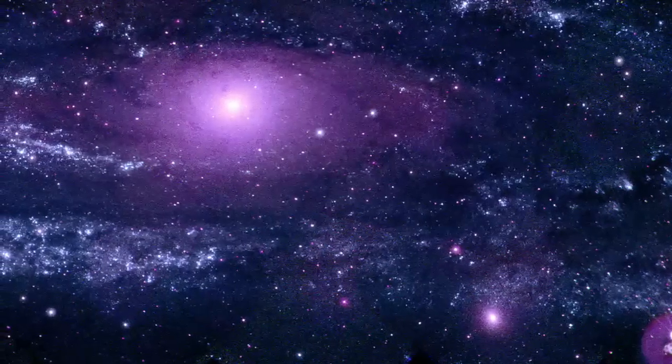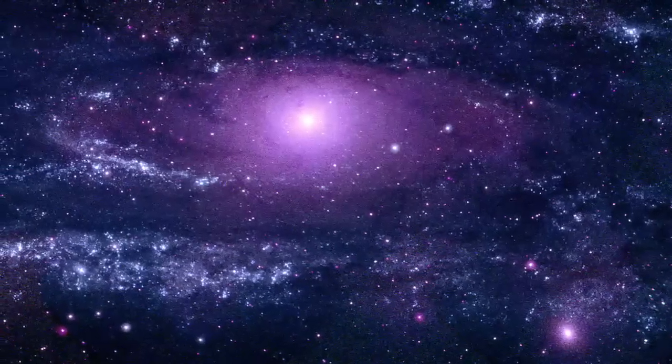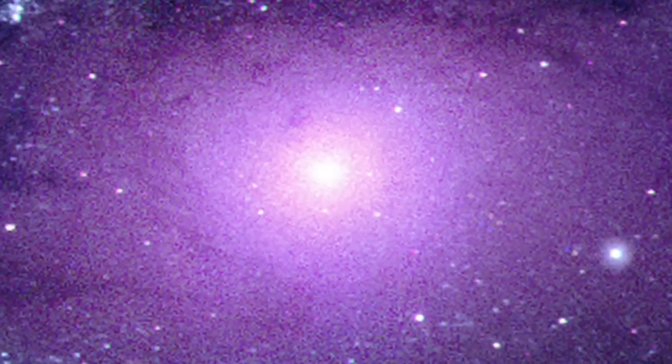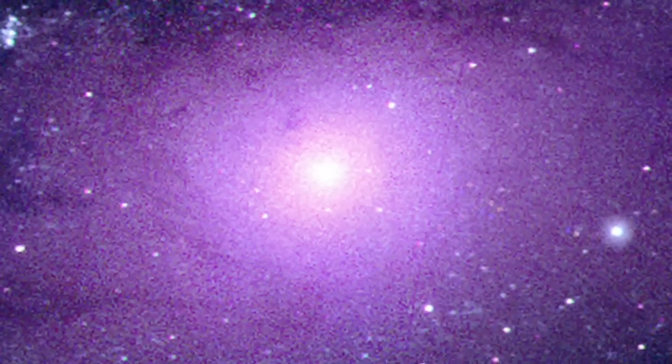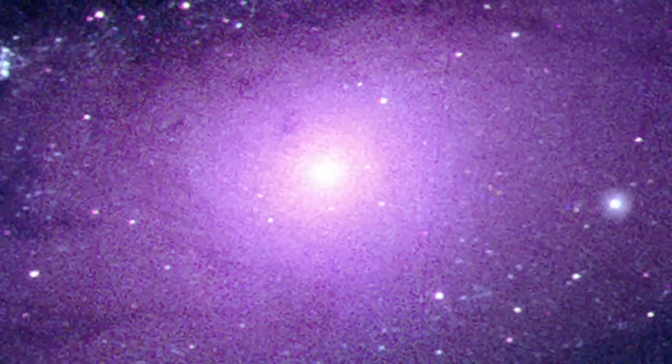The first thing you notice is the striking difference between the galaxy's central bulge and its spiral arms. The bulge is smoother and redder because it's full of older and cooler stars. Very few new stars form here because most of the materials needed to make them have been depleted.